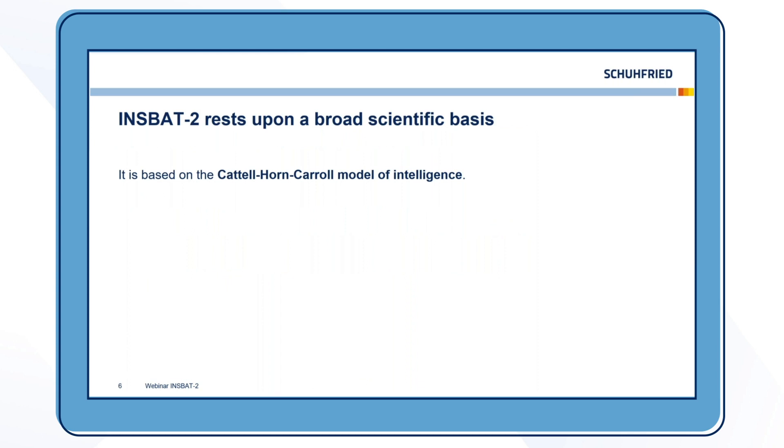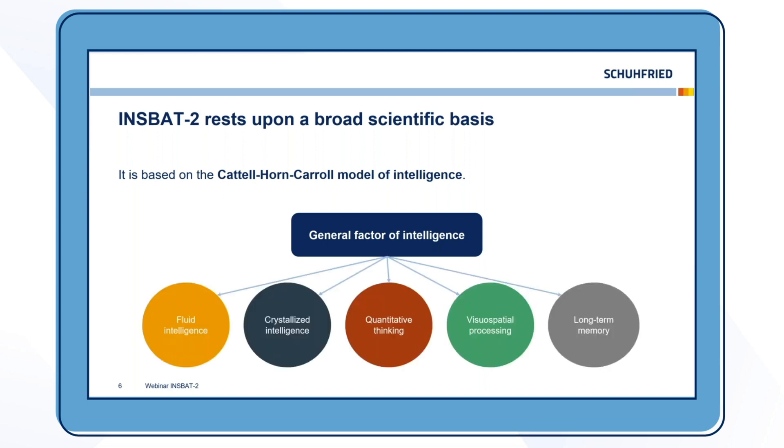INSBAT-2 rests upon a broad scientific basis. It is based on the Cattell-Horn-Carroll model of intelligence, which I will shortly describe now. Many of you might know it already. The model postulates a general factor of intelligence and divides intelligence into subsections. Five of these subsections, also called secondary factors, are measured by INSBAT-2. You might ask yourself, how did we choose these subsections? The answer is pretty simple: we chose the ones that are most predictive for career and academic success.